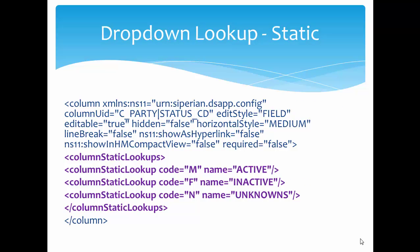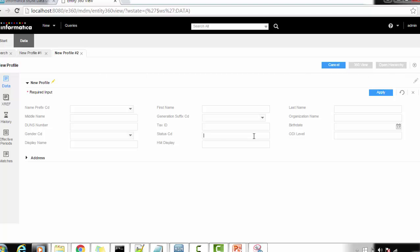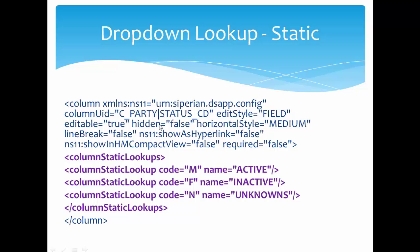For the static dropdown lookup, we configure the bdd_config.xml with predefined values. We have the C_PARTY table, and inside it the status_code column. Currently there are no values defined for this status code. We need to open the bdd_config.xml and add the column static lookups section, creating entries with a code and a name — we can use any value for both.